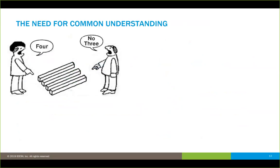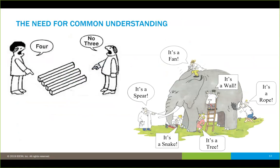Having that framework and enterprise model helps with the need for common understanding. If people look at certain things from different perspectives, they may see them differently. Part of what the enterprise model does is figure out what the organizational perspective is and resolve those differences. In any organization, when you look at any particular thing, depending on your perspective it can mean many different things.